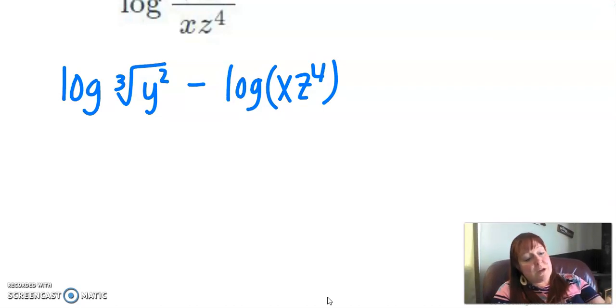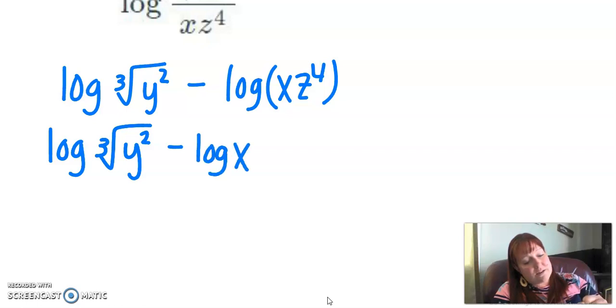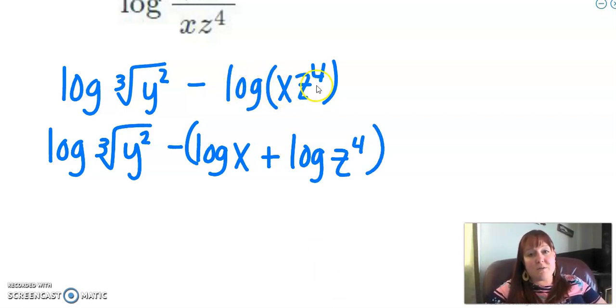Then I see those two things are multiplying together, so I'm going to split those again too. So that's log of x plus log of z to the fourth. But you notice I was subtracting this whole thing. I was subtracting this entire log, so I need to subtract it even when I split it apart. So I subtract the log x and the log of z to the fourth.